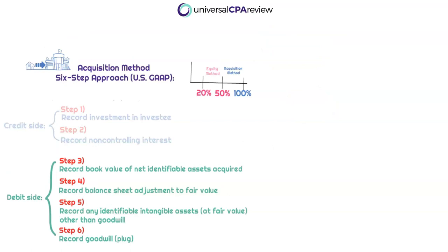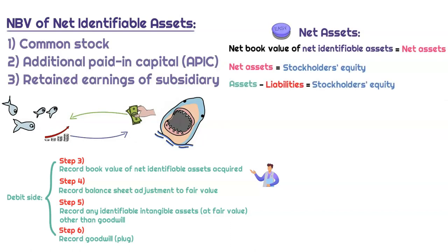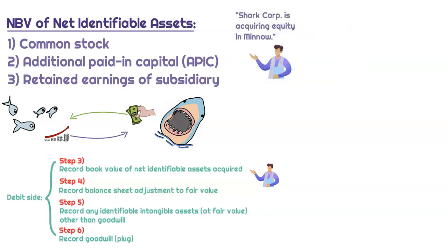Now digging into the debit side — steps 3, 4, 5, and 6. Starting with step 3, this is going to be the book value of any net identifiable assets that have been acquired. We can also think of this as the book value of stockholder's equity — common stock, additional paid-in capital, and retained earnings. SharkCorp is acquiring the equity of MinnoCorp, so those accounts are logically included.